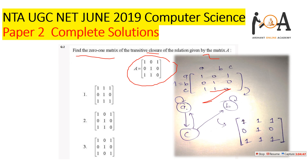For row c: c to a — there is a direct path, so it is 1; c to b — there is a direct path, so it is 1; c to c — we are already standing at c, so it is 1. This gives the corresponding transitive closure zero-one matrix generated from the original matrix. Option one is the correct answer. We are discussing solutions as per the official keys released by NTA.